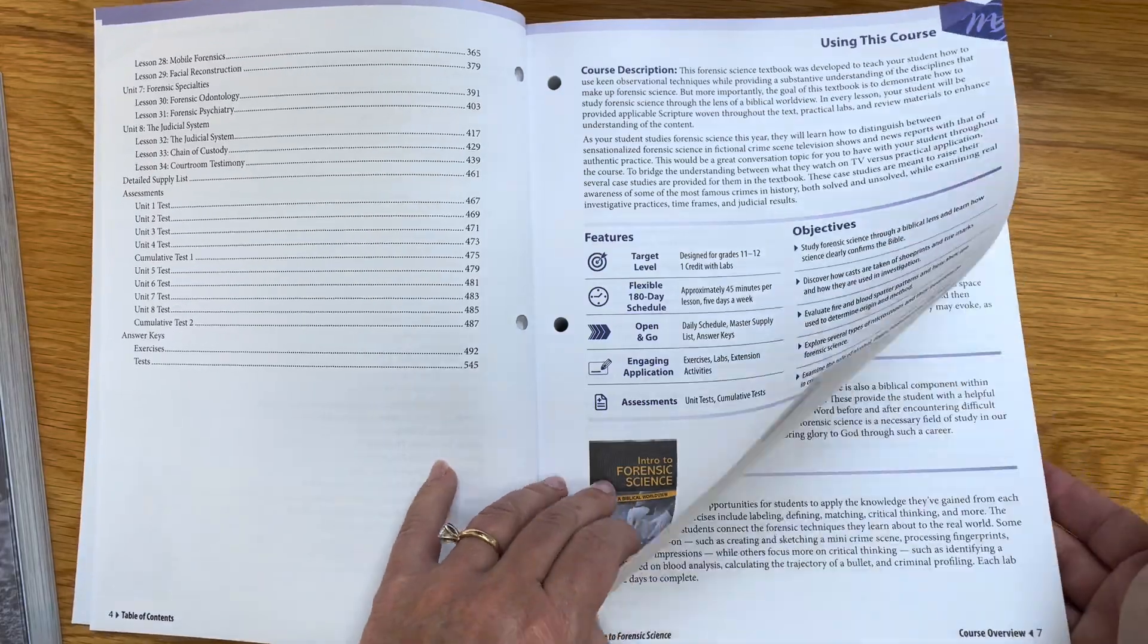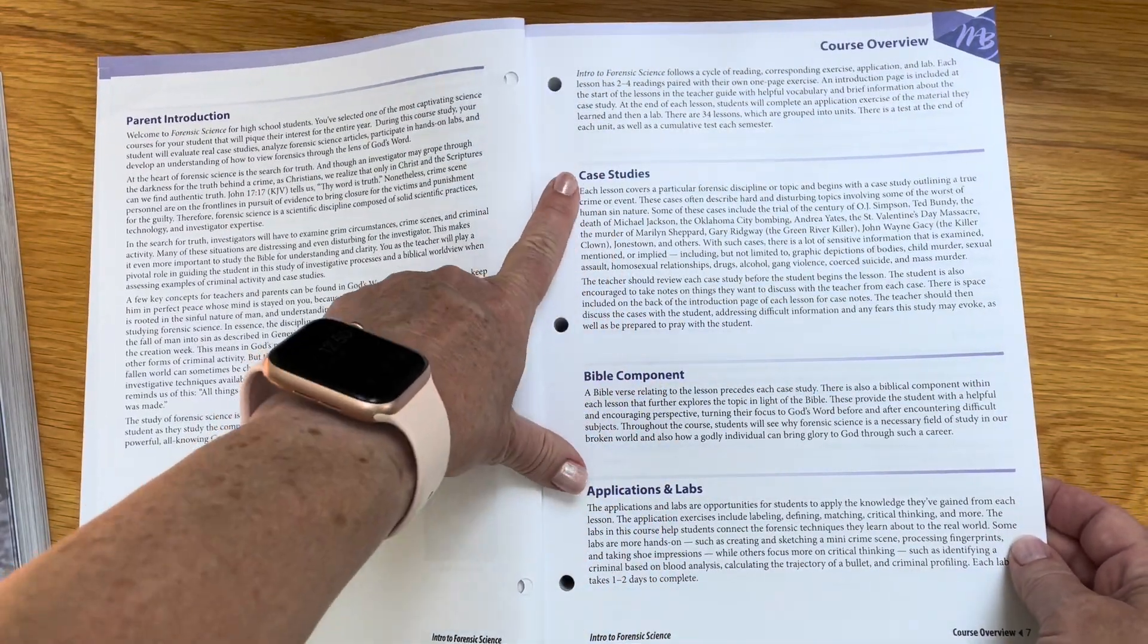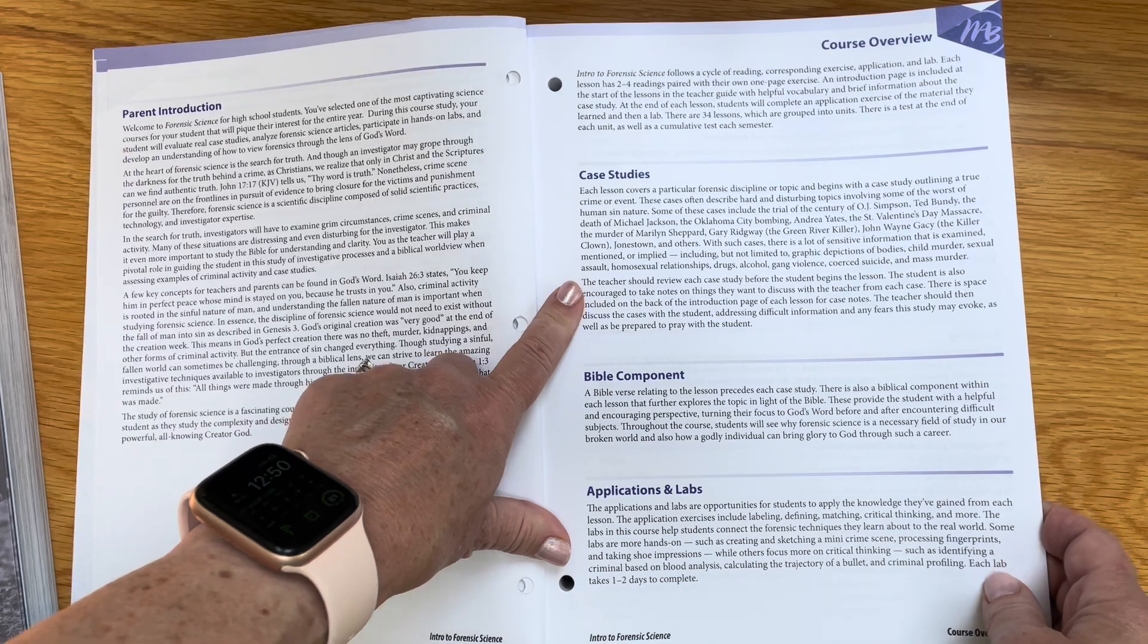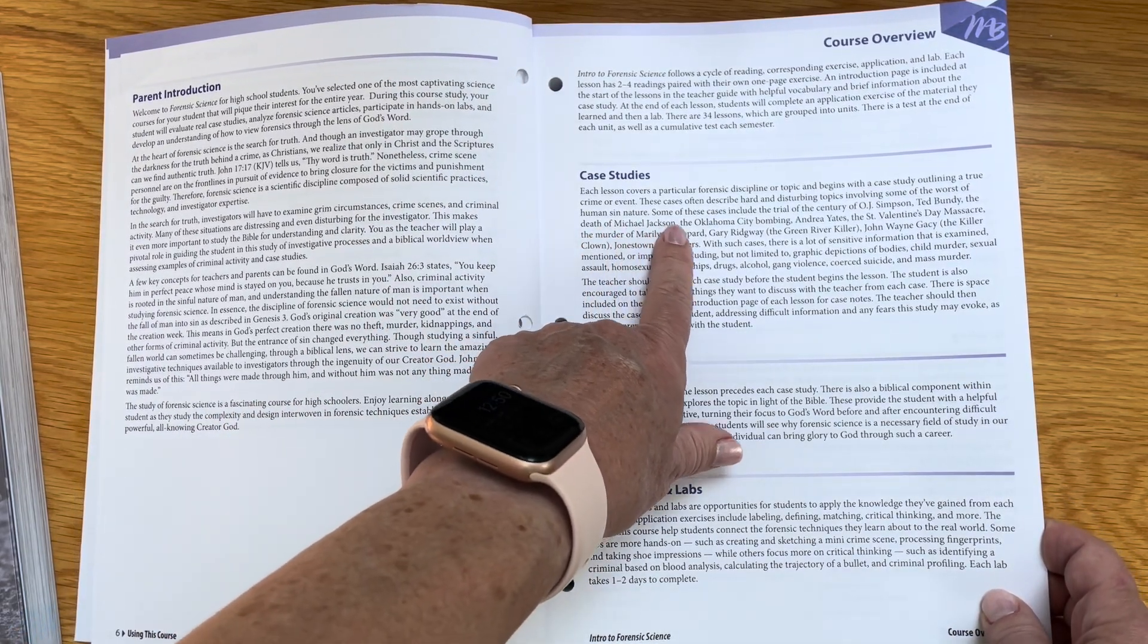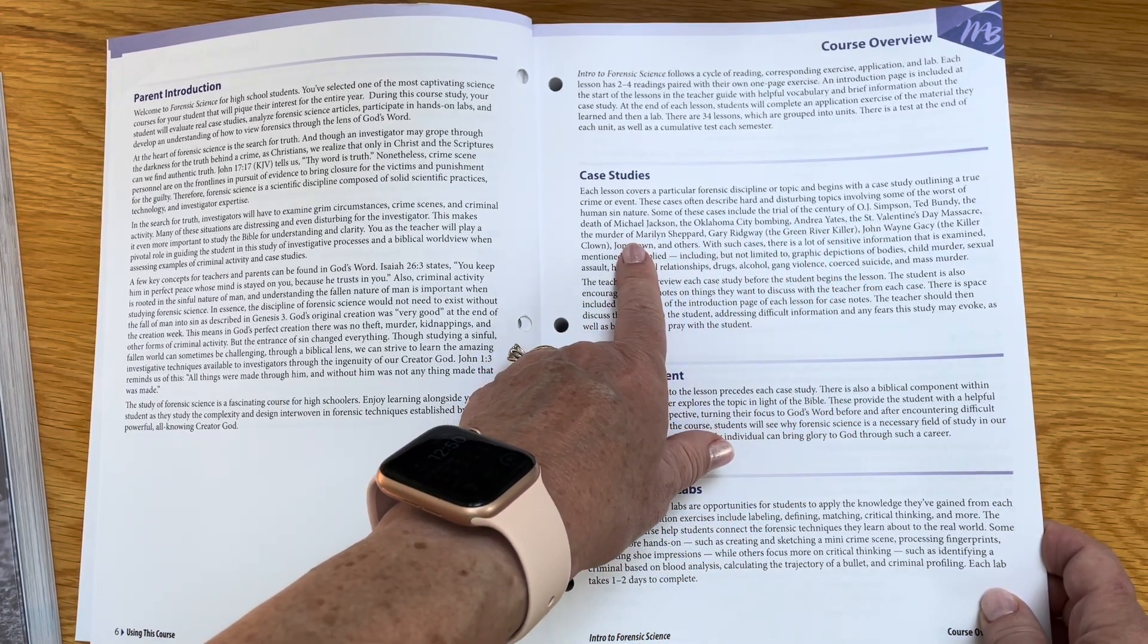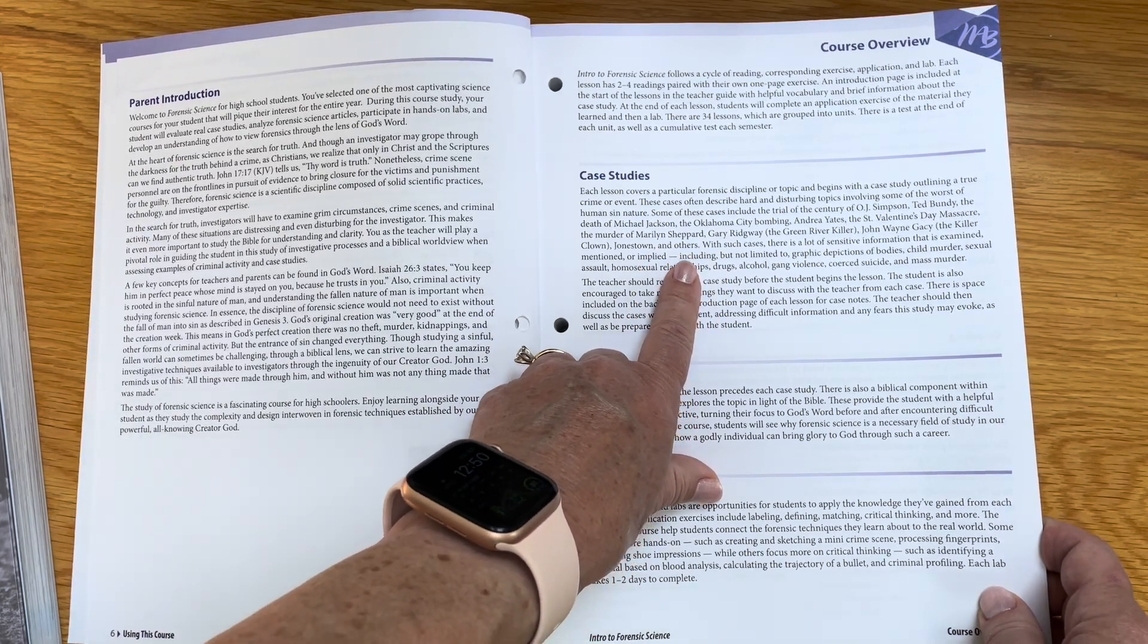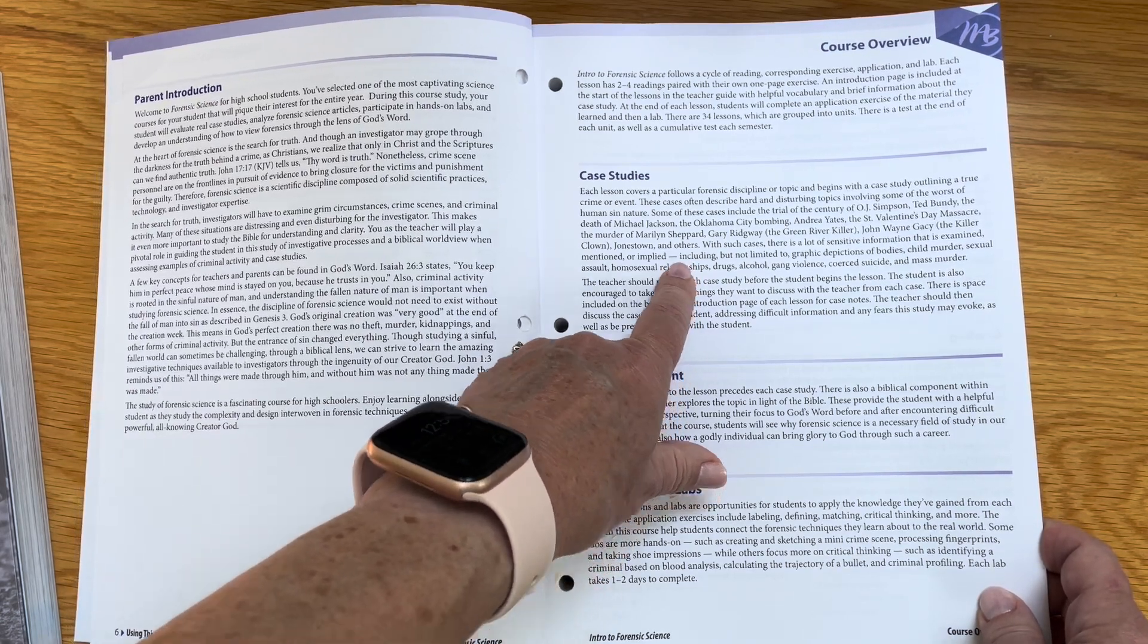Let me skip back to the beginning of this book and show you this in particular. It talks about some of the case studies that are actually studied in the curriculum and why they believe it should be for older students. There are trials like OJ Simpson, Ted Bundy, lots of murder cases, serial murder cases, so very graphic and hard topics to deal with. That's why they recommend it for older high school students.